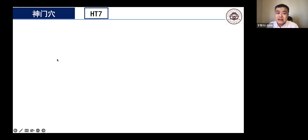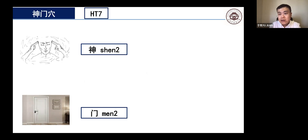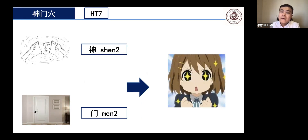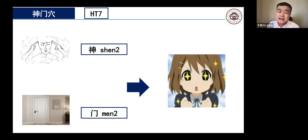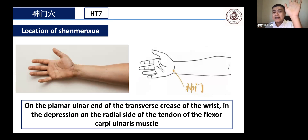When we use Shen Men acupoint, it can help adjust your mind function. We often use it for mind diseases — anxiety, insomnia, or psychological discomfort. The location of Shen Men Xue is on the inside of the arm. On the little finger side, you can see a tendon. By the end of the wrist crease, on the ring finger side of this tendon — that is Shen Men Xue.